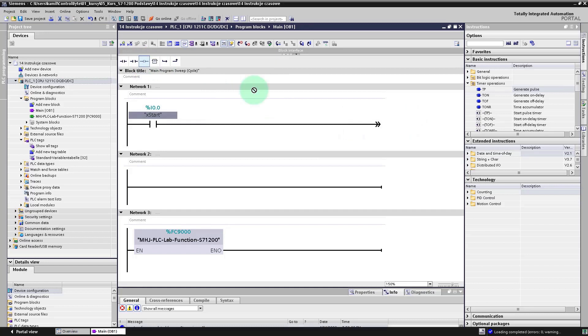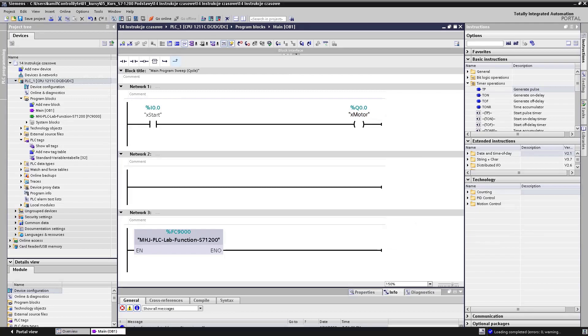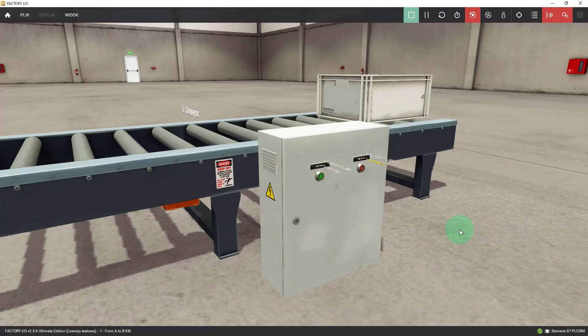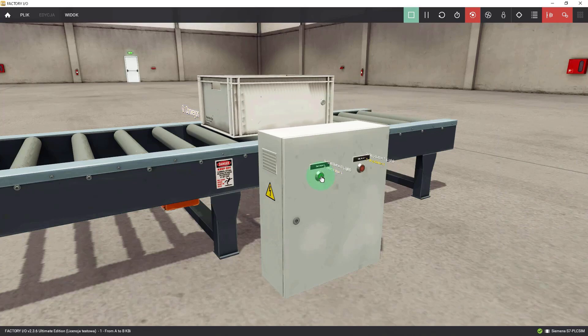Next, add a coil and type here X motor. Download the program to PLC simulator. Next, start Factory IO simulation. My simulation is active right now. When I press on the start button, container moves. When I release start button, container stops.